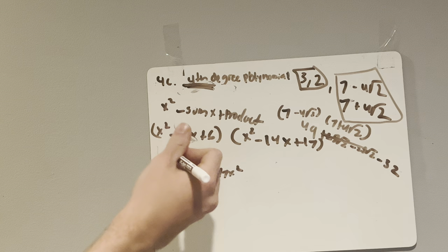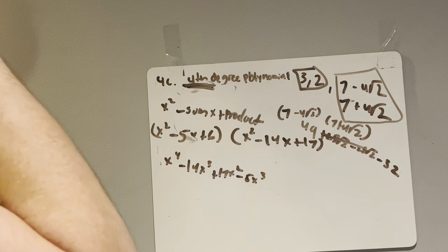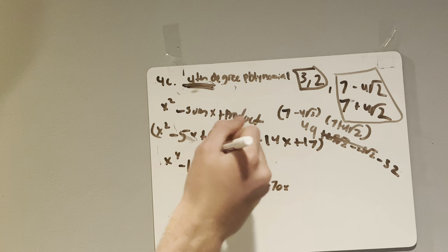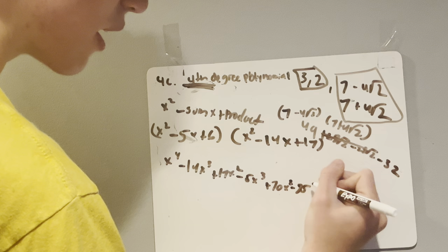Next, negative 5x and x squared is negative 5x cubed. Negative 5x and negative 14x is 70x. And negative 5x and 17, 5 times 17 is 85. Negative 5 times 17, that's negative 85. Of course, the 70x is 70x squared. This is 85x.